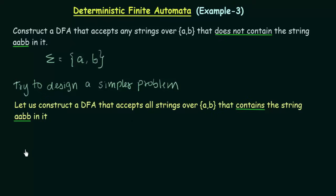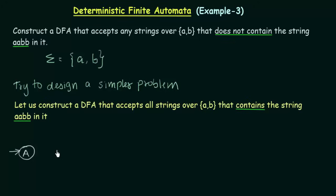Whenever we start constructing a DFA, we first need a starting state. Here I will have my starting state as A, and I give an arrow indicating that this is the starting state. State A can either get inputs A or B. If state A gets input A, I will send it to the next state which I will call state B. Why? Because I need to get the sequence AABB — it should accept everything that contains this sequence.